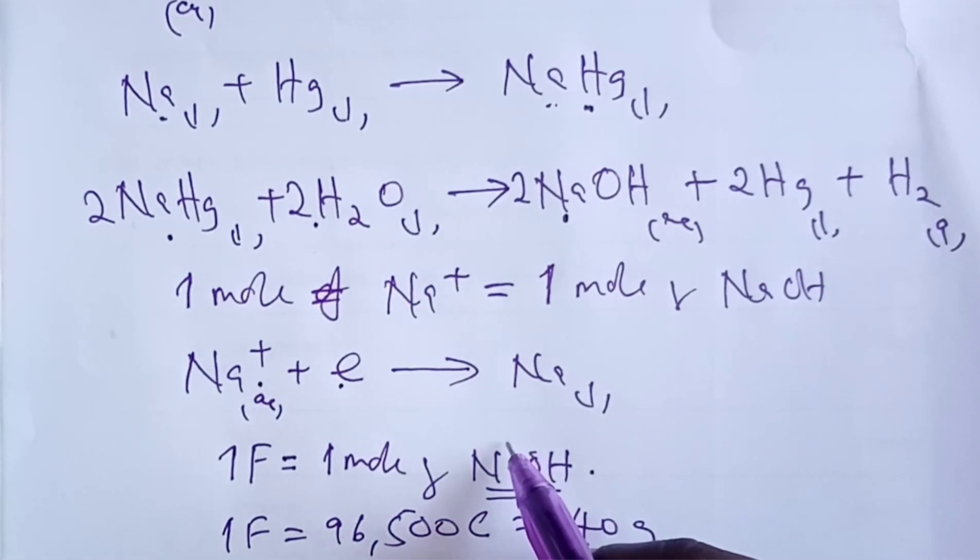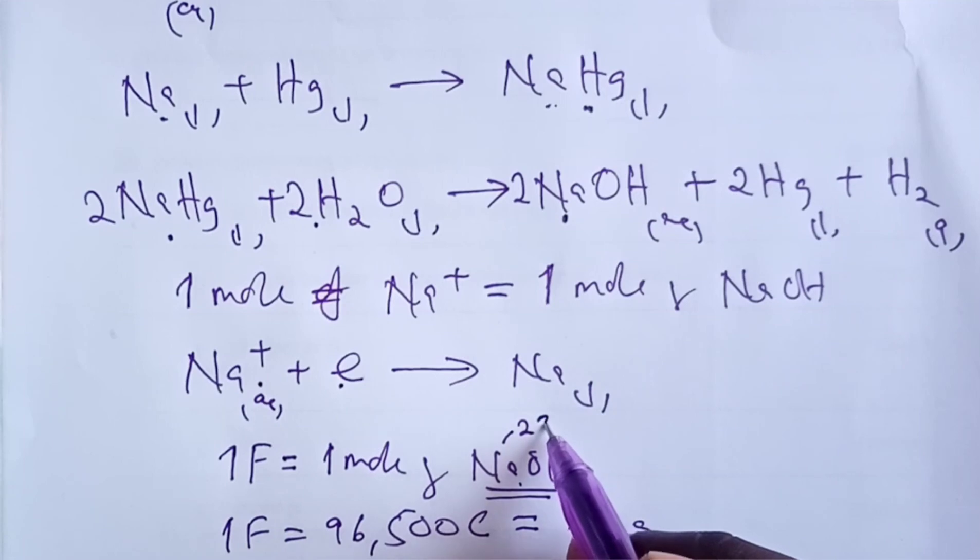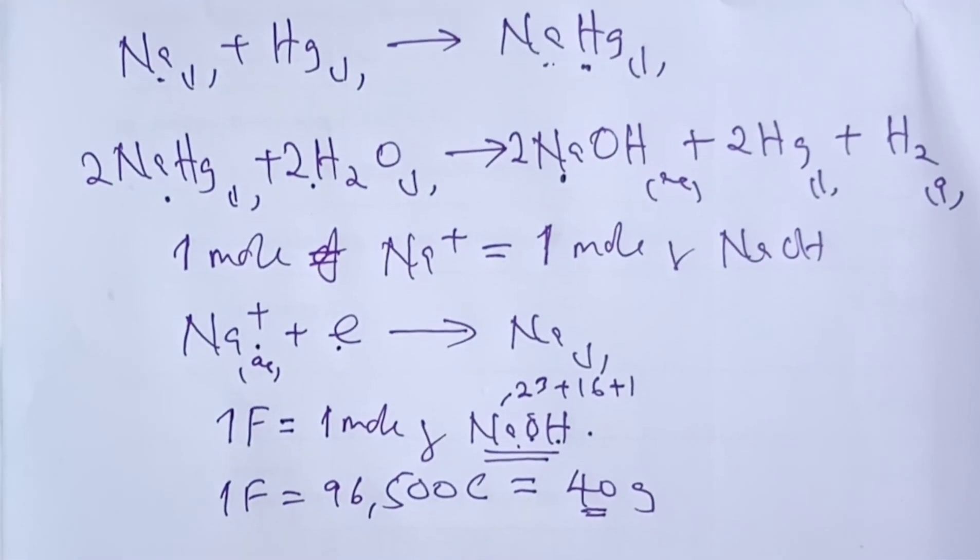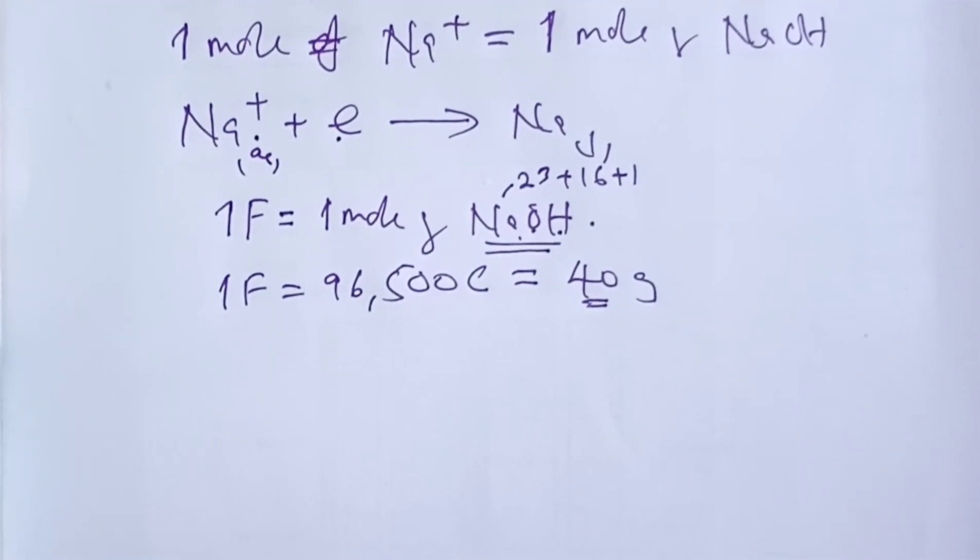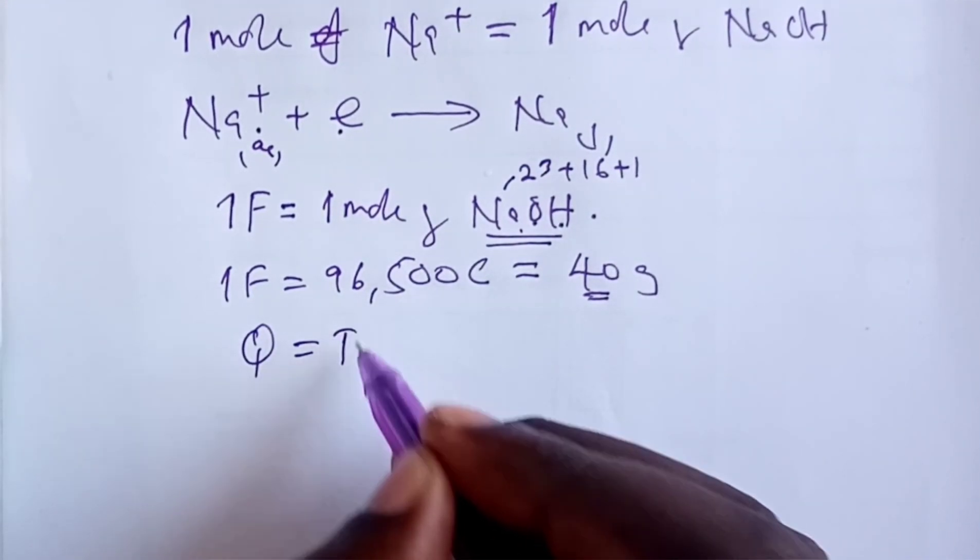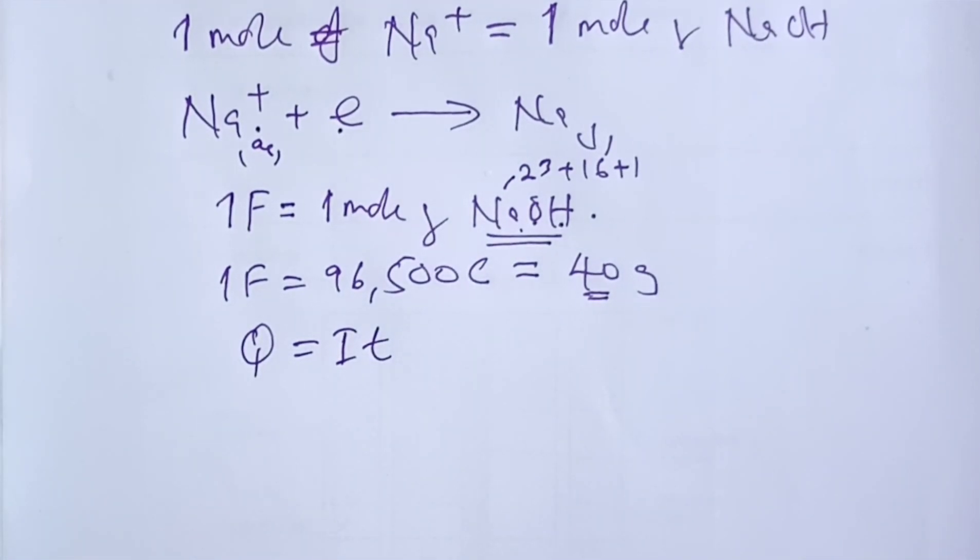One faraday is equivalent to 96,500 coulombs, and this is able to give me 40 grams of sodium hydroxide. Because molar mass of sodium hydroxide is 23 for sodium, added to 16 for oxygen, and one for hydrogen, I'll be able to get 40 grams if one faraday of electricity is used. Getting back to my question, I want to get now the quantity of electricity used as per the question.